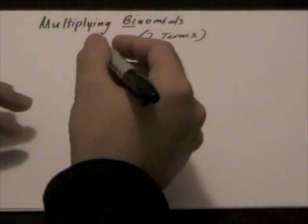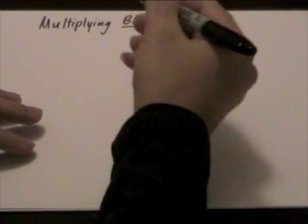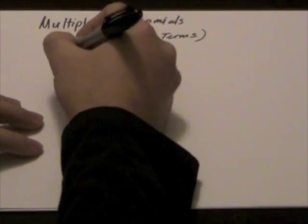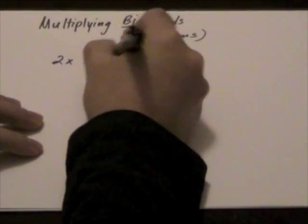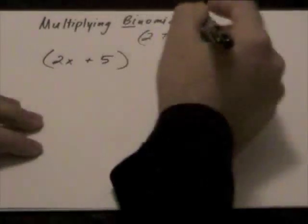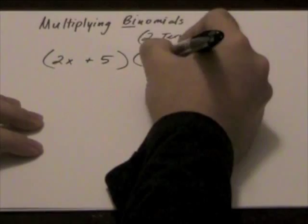And each term, as we've stated in our previous lesson, are separated by either addition or subtraction sign. Here's an example of a set of binomials that we're going to multiply together: 2x plus 5, x minus 4.